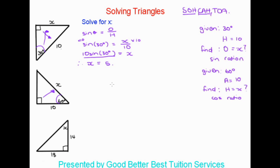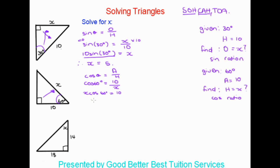We write out: cos theta is equal to adjacent over hypotenuse. Then we substitute: cos 60 degrees equals 10 over x. To get x by itself, we multiply both sides by x, giving x cos 60 degrees equals 10. Then we divide both sides by cos 60 degrees, so x equals 10 over cos 60 degrees. Plugging that into the calculator gives a final answer of 20.